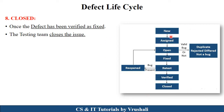Let's take a quick revision. First, the tester team identifies a defect — that is the new state. Then, those defects are assigned to the developer team. In the open state, the developer checks whether it is a valid or invalid defect. If valid, they move to the fixed state; if invalid, they move to duplicate, rejected, or deferred. In the fixed state, the developer solves all defects and sends the status to the tester. In retest, the tester checks if the defect is still present. If still present, they move to the reopen state and send it back to the developer. If solved, they move to the verified state, ensure no defects remain, and then move to the closed state where all issues are closed.